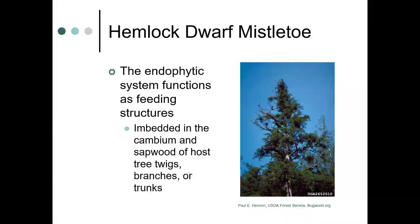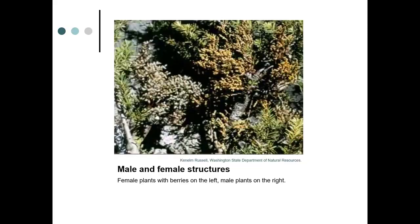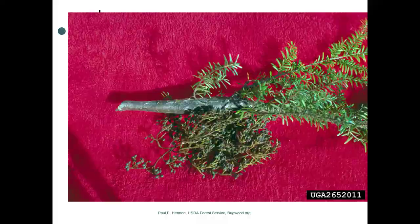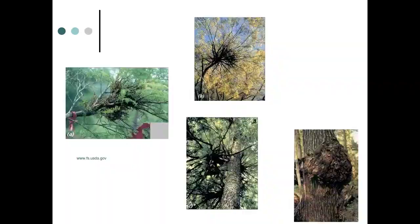Here are the structures — the female plants with berries are on the left, and the male plants are on the right. Here it is again on hemlock, and here are some other types of mistletoe. To manage mistletoe, you want to remove plants by harvesting or pruning in mid to late summer. Aerial shoots will regrow unless you take the entire host branch off.